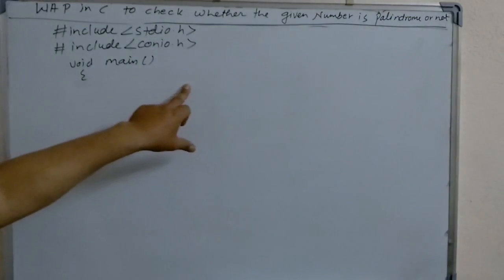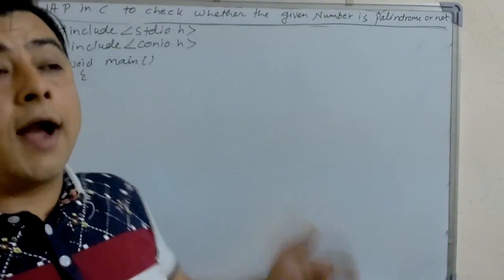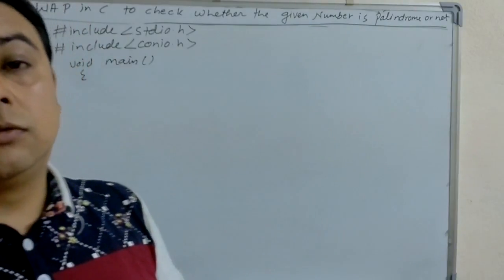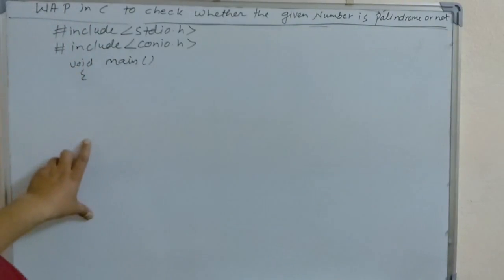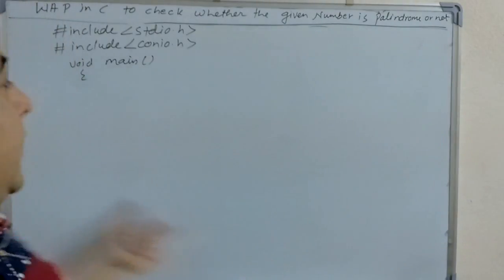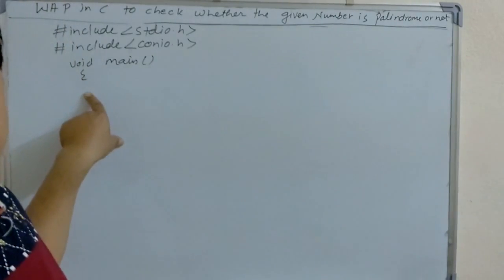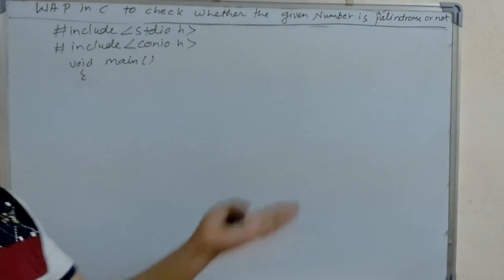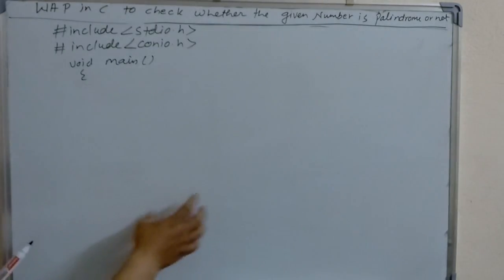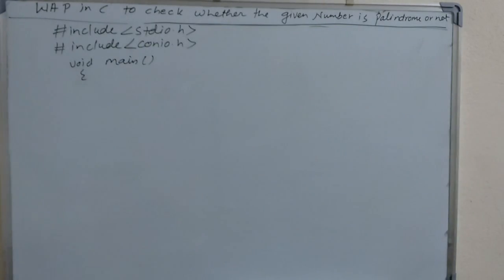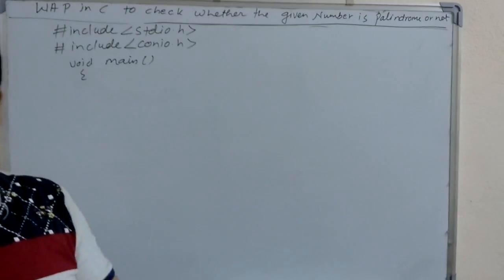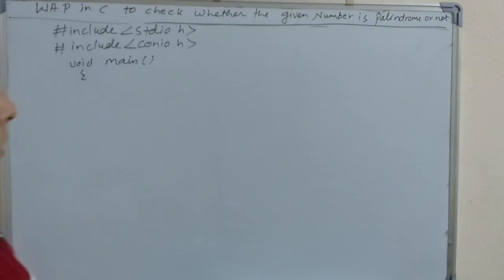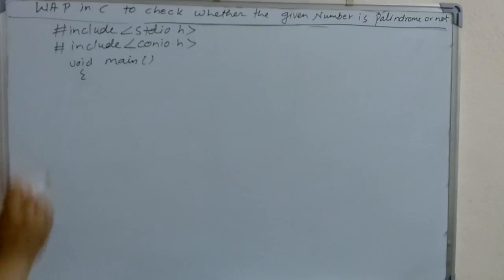We have to declare the variables here. What variables are essential in the program? We don't need to remember all the variables and declare them first. Whatever variables we use in the program, we can declare them after. So I'll leave a line here and then start writing the program.